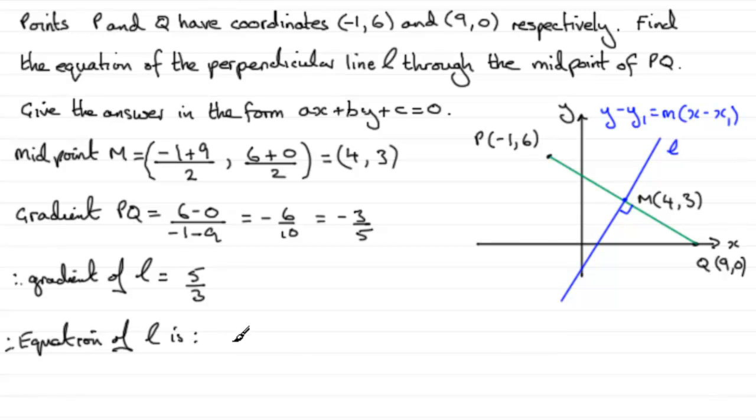Well, it's going to be Y minus Y1, Y1 being the 3, equals M, the gradient. The gradient interval is 5 thirds. And that's being multiplied by X minus X1, X1 being the 4.